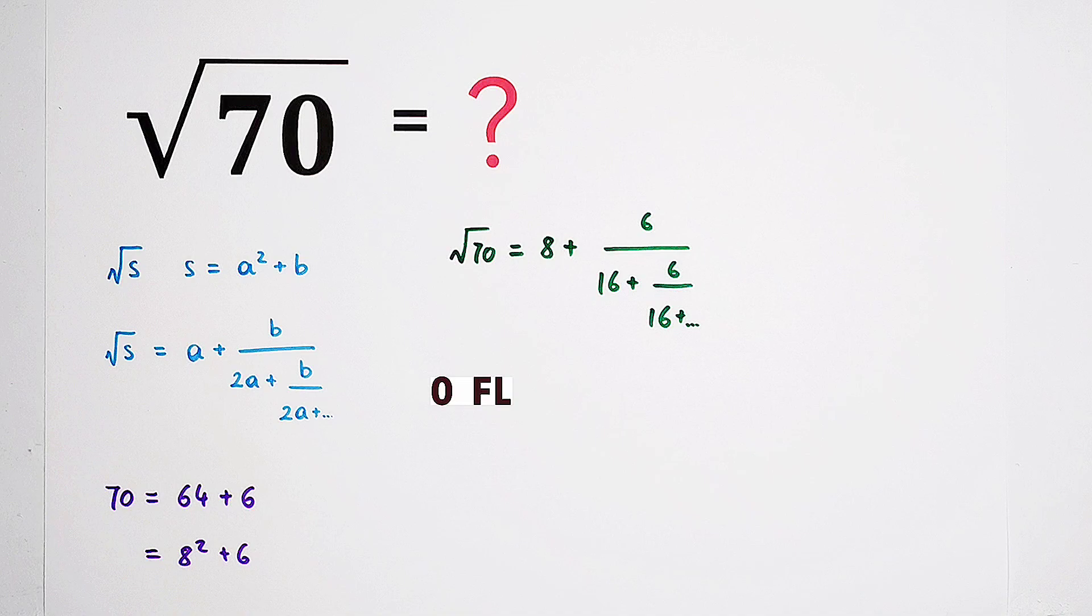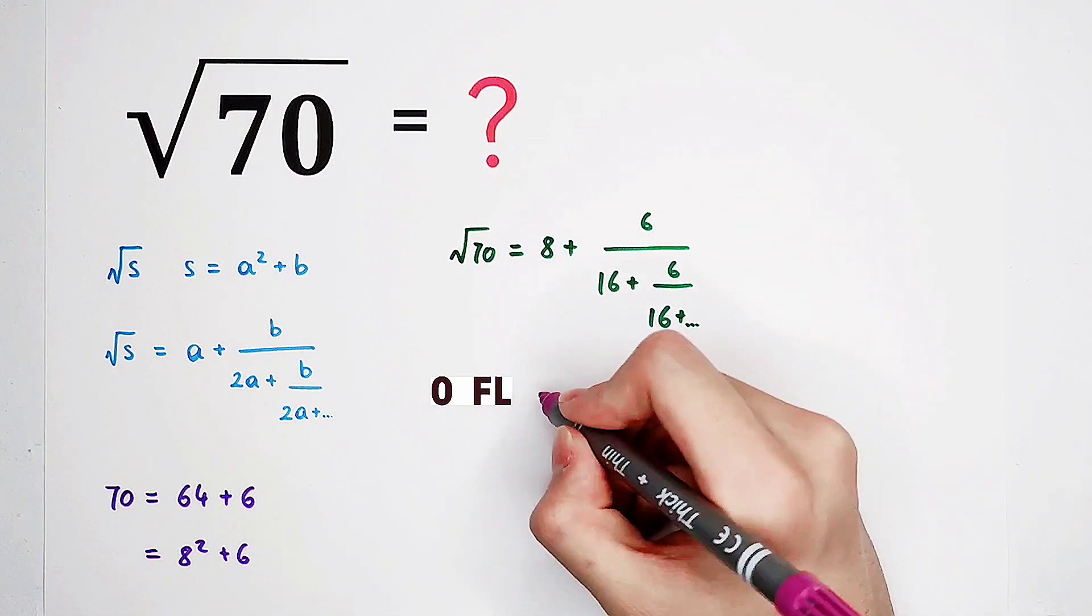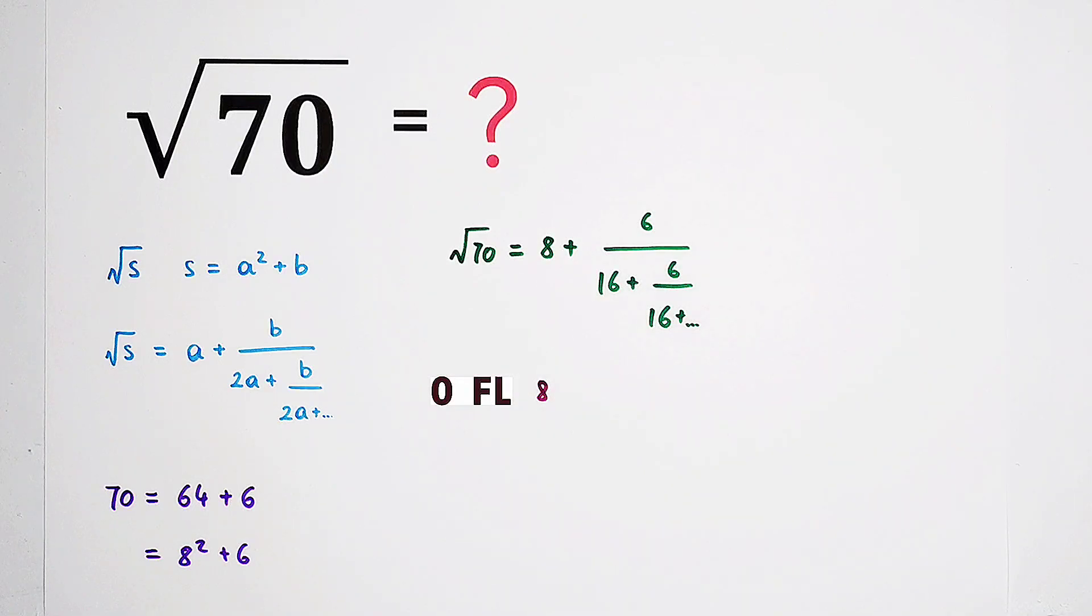If we take zero fractional lines, then it is going to be 8. So we can say that square root of 70 is approximately equal to 8. However, the approximation is, of course, very bad.